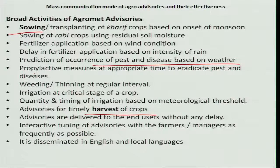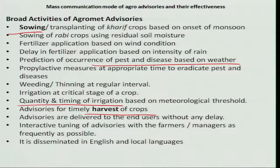Weeding and thinning operations are also advised based on moisture and plant population. Irrigation at critical stages of the crop is given according to crop stages. Quantity and timing of irrigation based on meteorological threshold levels is also provided according to the soil moisture situation. Advisories for timely harvest of crops are provided on the onset of rainfall or monsoon.